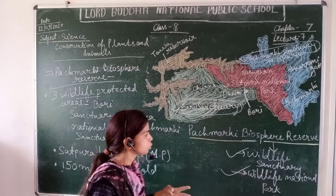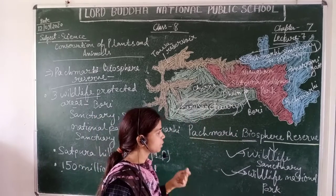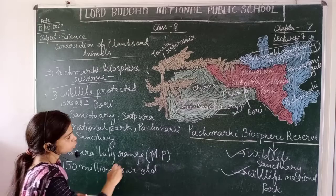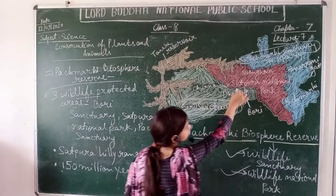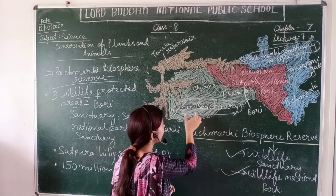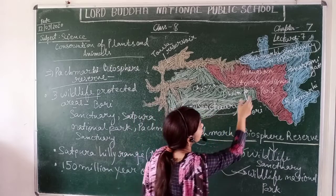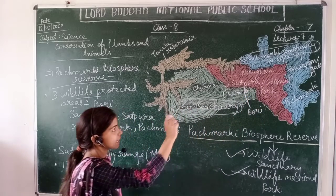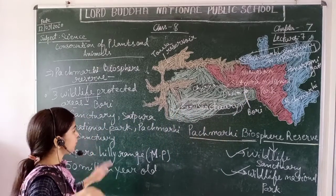The biosphere reserve has three zones: core zone, buffer zone, and transition zone. Satpura National Park is our core zone. Puri and the wildlife sanctuaries make up our buffer zone.